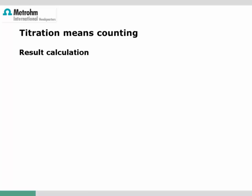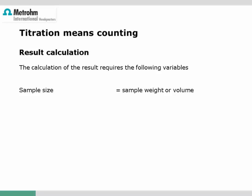Whatever titration method is used, the result — the content of the analyte in the sample — has to be calculated afterwards, and a few variables are required. First, we need to know the exact sample size, usually a weight or a measured volume. For liquid samples, a dilution factor may also have to be considered.